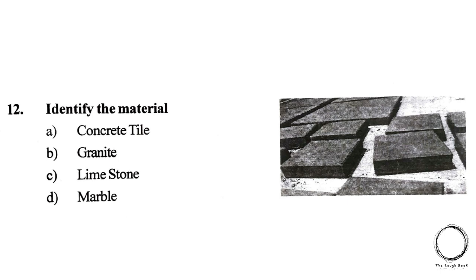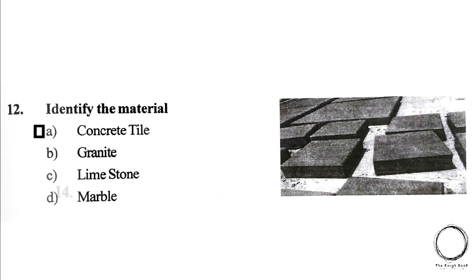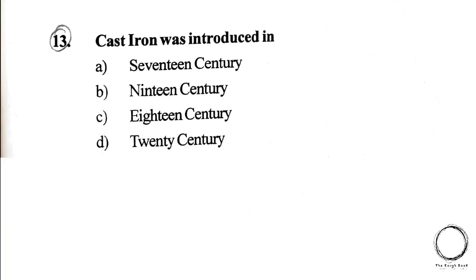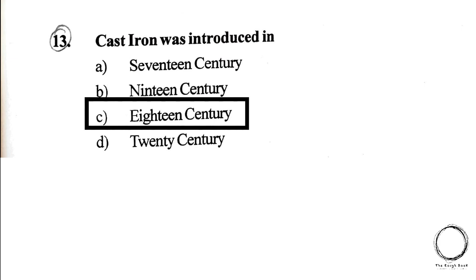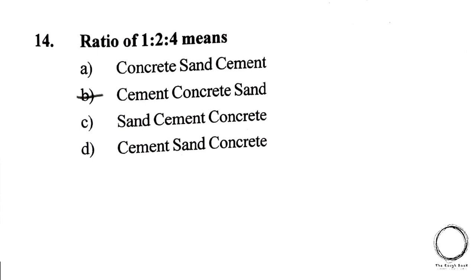Next question: Identify the material. Options are A) Concrete tile, B) Granite, C) Limestone, D) Marble. The answer is A) Concrete tile. Next question: Cast iron was introduced in — A) 17th century, B) 19th century, C) 18th century, D) 20th century. The answer is C) 18th century.